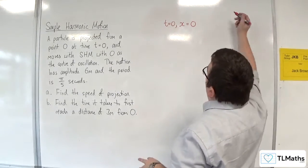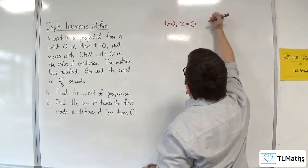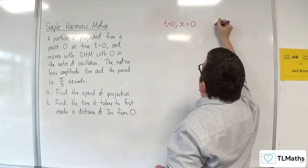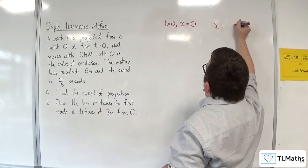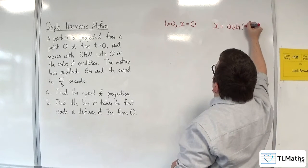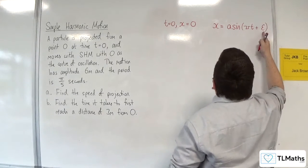So we know that the general solution to our simple harmonic motion is x is equal to A times sine of omega t plus epsilon, the phase shift.